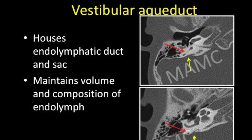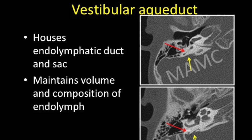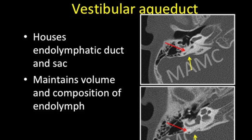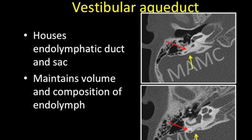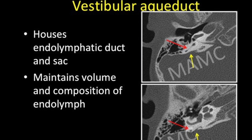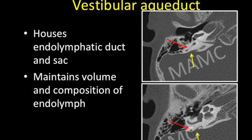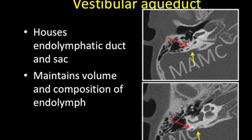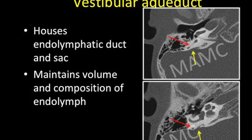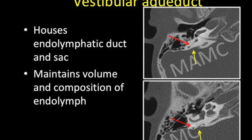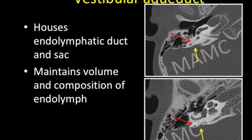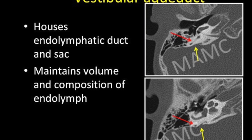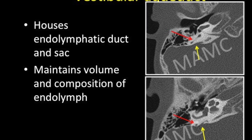The vestibular aqueduct is a bony channel extending from the posterior superior part of the vestibule, coursing laterally and inferiorly along the posterior petrous surface. It houses the endolymphatic duct and sac. The vestibular aqueduct, demarcated by the yellow arrow, lies nearly parallel and posterior to the posterior semicircular canal.